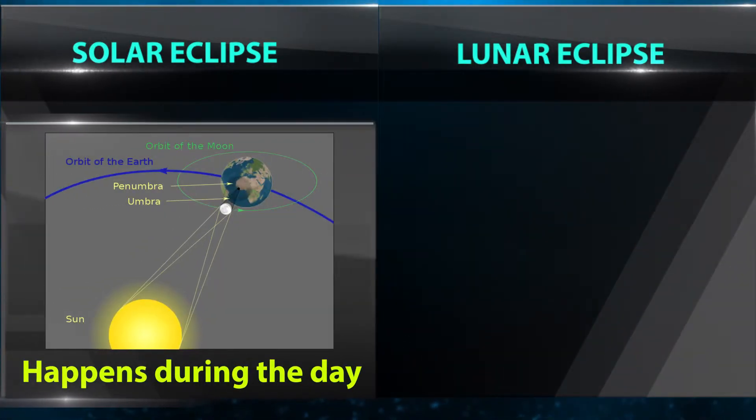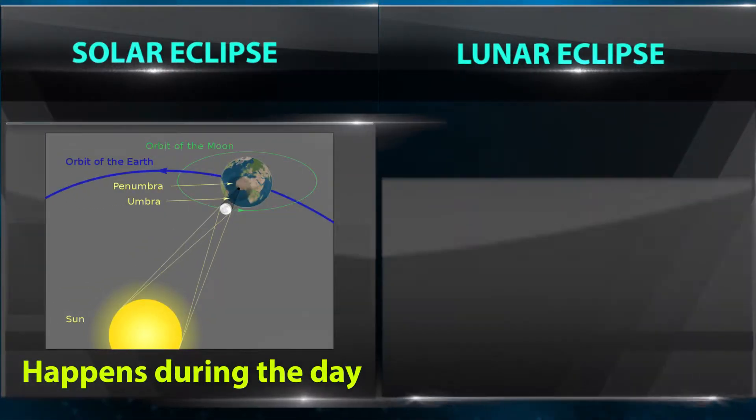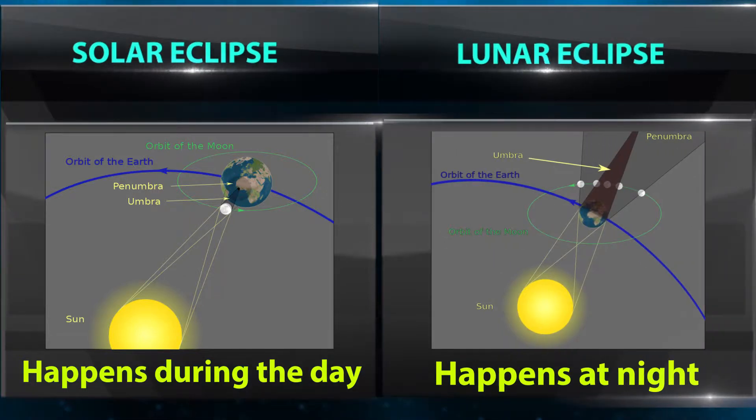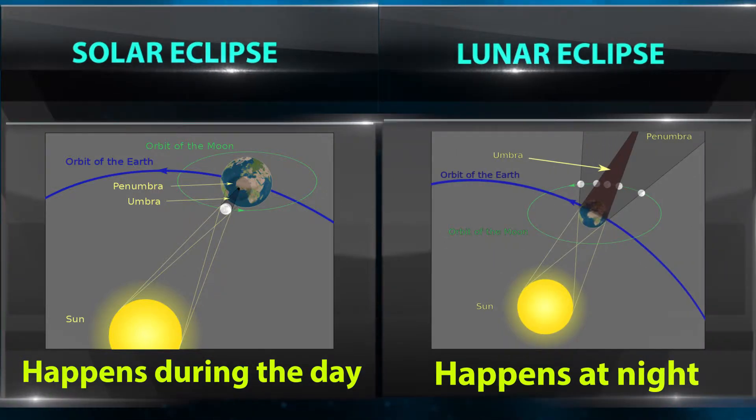Solar Eclipse happens during the day. Lunar Eclipse happens at night.